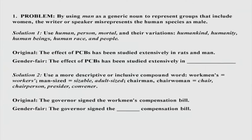The same problem of using the masculine noun 'man' or 'men' can also be solved using what is called an inclusive compound word or a descriptive word that actually describes what the work is about. For example, we have a lot of words where 'man' or 'men' is used — like 'chairman' or 'workman'. Instead of 'chairman' or 'chairwoman', you can use just 'chair', 'chairperson', or a descriptive term like 'presider' — somebody who presides over a function — or 'convener'. That is another way to avoid the use of the masculine noun 'man'.